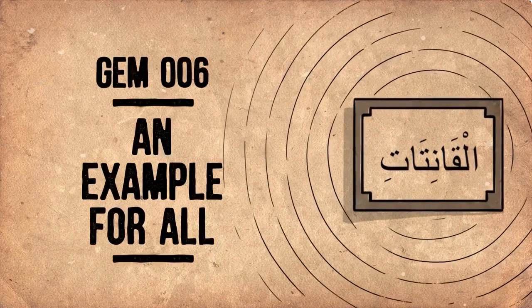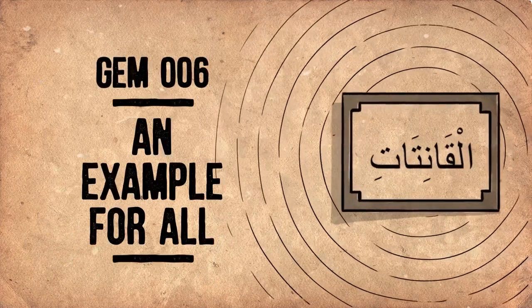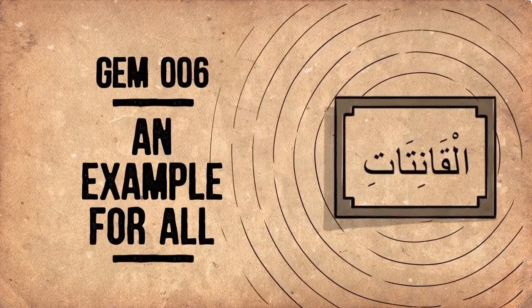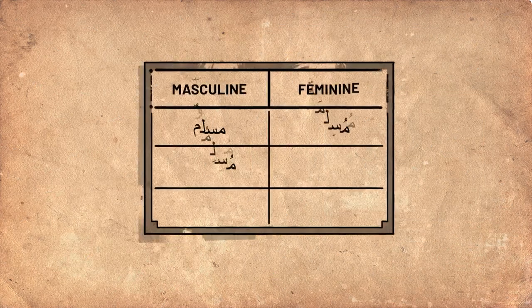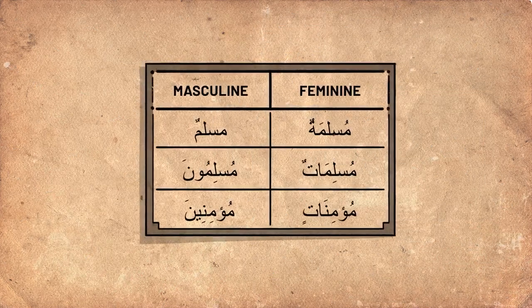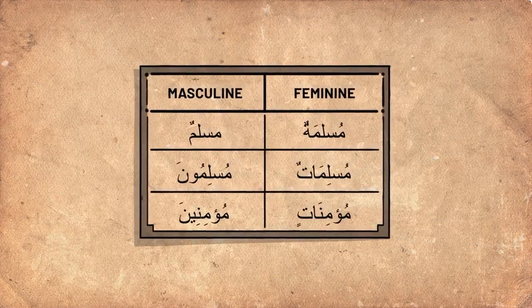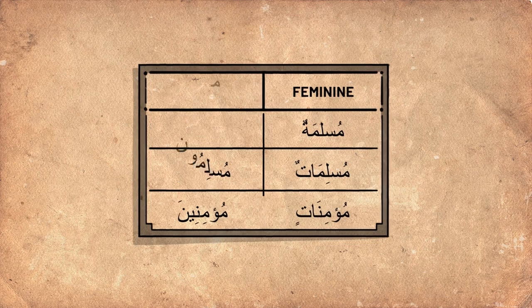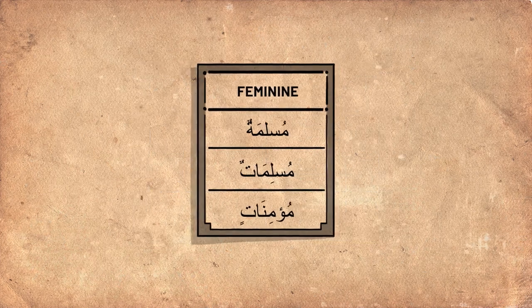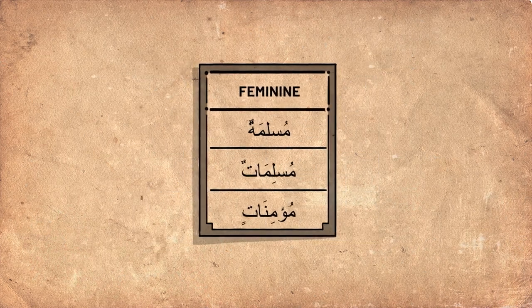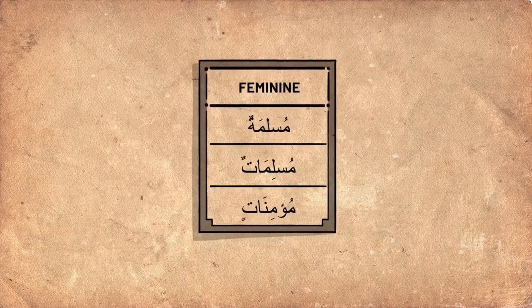Qur'an gem 6: an example for all. In Arabic, you can tell the gender of a word by looking at its ending letters or its ending vowel. Understanding this simple concept can teach us subtle lessons from the Qur'an.